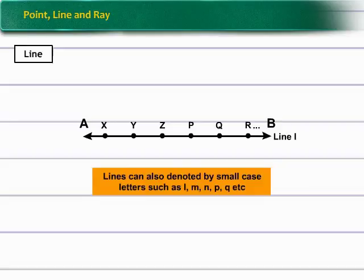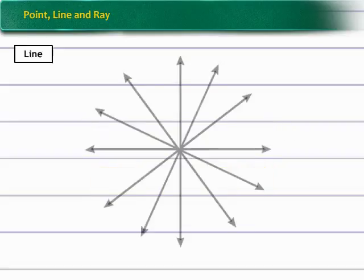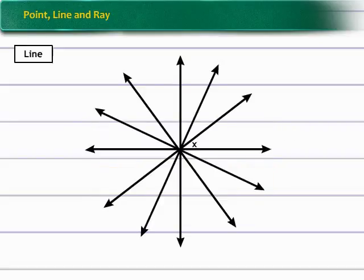Lines can also be denoted by small case letters such as L, M, N, P, Q etc. In this figure, you will see that from a point X infinitely many lines can be drawn such as L, M, N, O, P, Q.